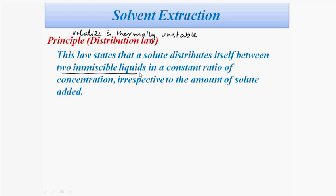An important point in the definition is the two immiscible liquids. Miscible liquids are those which completely mix into one another, whereas immiscible liquids do not mix with each other and form separate layers. In solvent extraction, the solute is volatile and thermally unstable, and it distributes between the two immiscible liquids in a constant ratio of concentration.